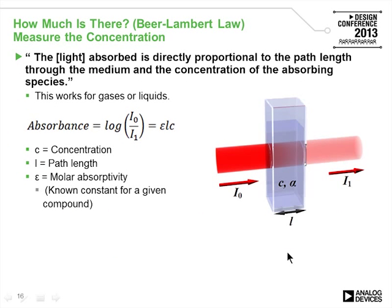You can also determine how dense or how much liquid or gas is present by looking at the amount of light going in and comparing it to the amount coming out. We put the liquid in a container and the Beer-Lambert law measures this concentration using an absorbance equation. If you know the color of light going into the liquid and measure the color and intensity coming out, you can determine what color the liquid is.